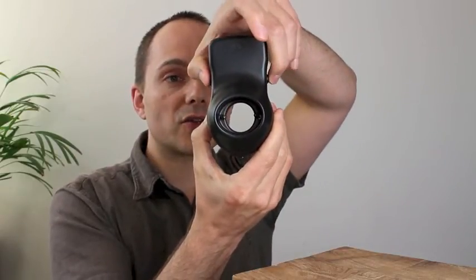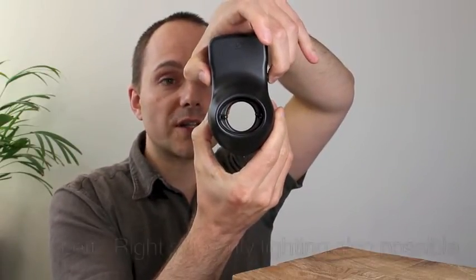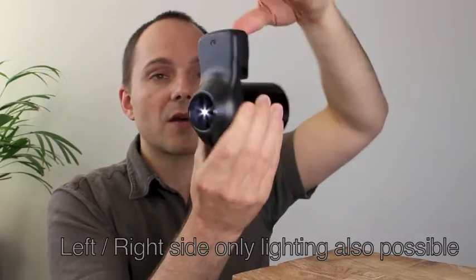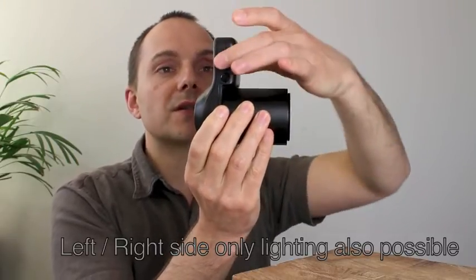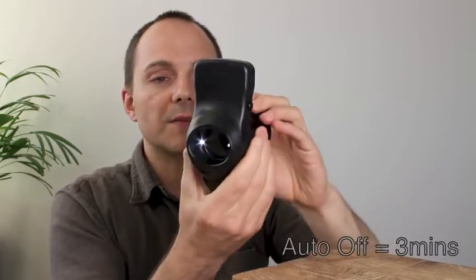As you can see here on the side, we've got the two buttons to switch it on and off like this. Above here we've got the battery compartment and the electronic circuit inside which we'll have a look at in a minute.